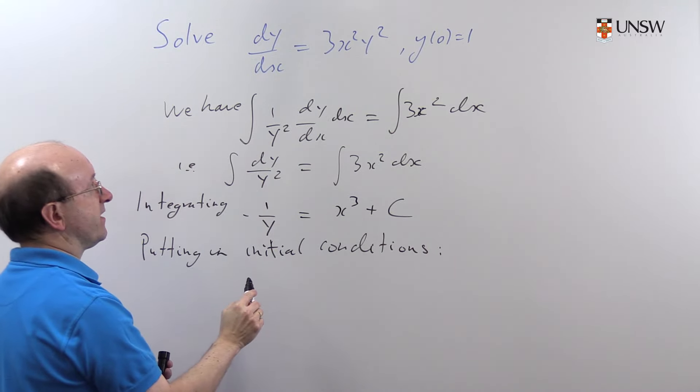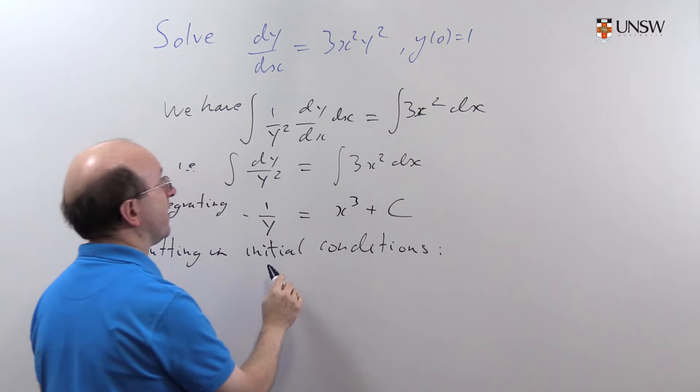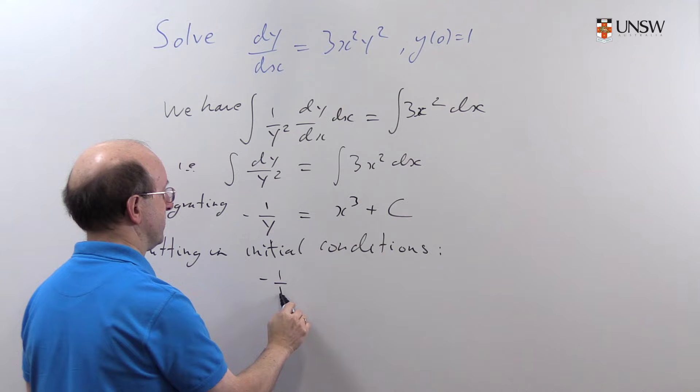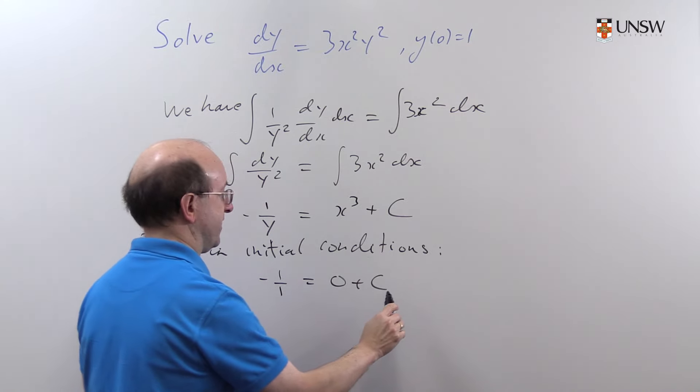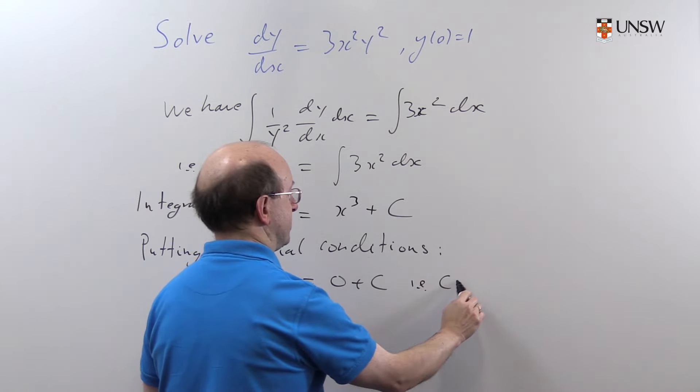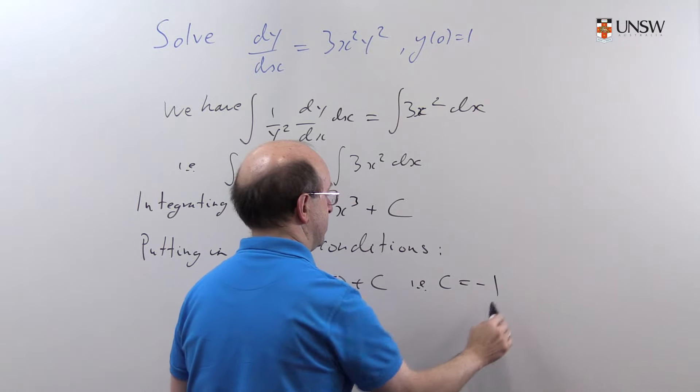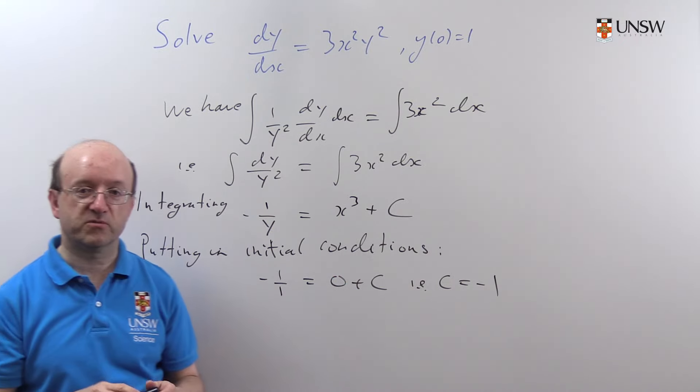Well, when x = 0, y = 1. So we get -1/1 = 0 + c. In other words, c = -1.